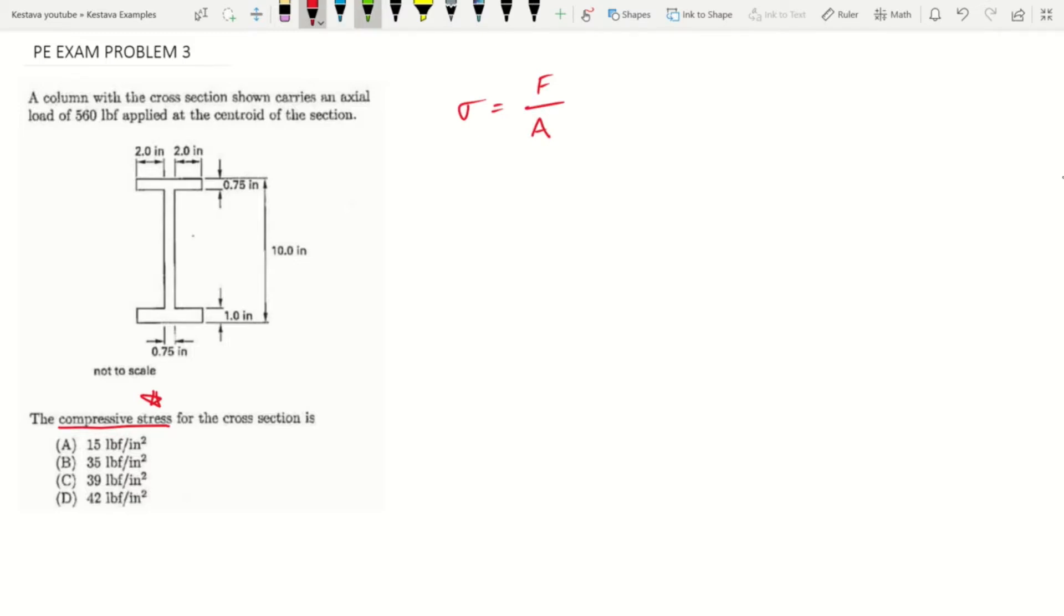If we look at our problem, we are given something. We're given 560 pounds. 560 pounds is a force, so we have the top part. That means we still need an area. We are given a cross sectional area. The only real thing we need to do for this problem is find the area of the cross section based on the dimensions given, finish our stress equation, and that will give us our answer.